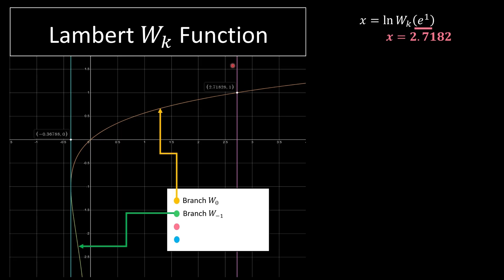Our value of 2.7182 is this pink line over here. And the x asymptote is this blue line over here, which is negative 0.368.